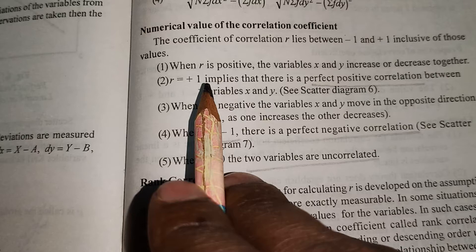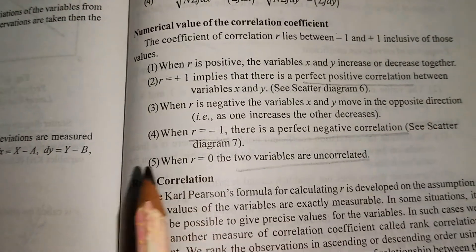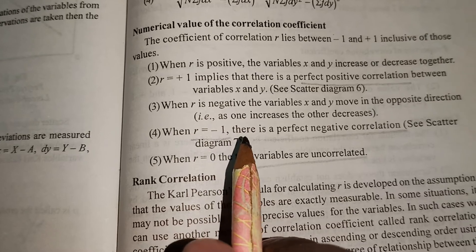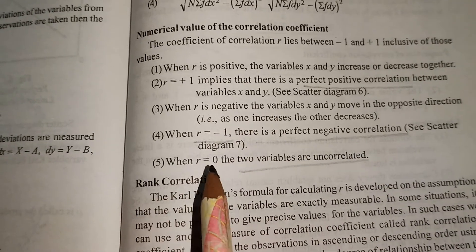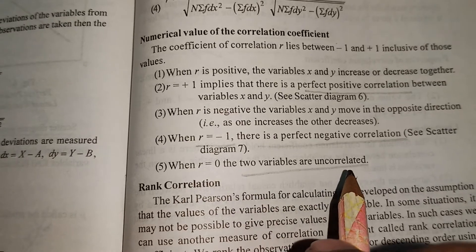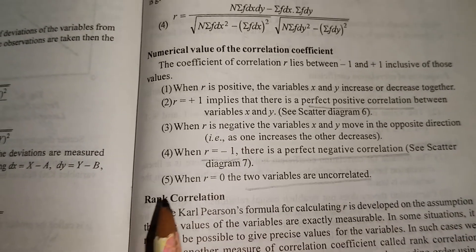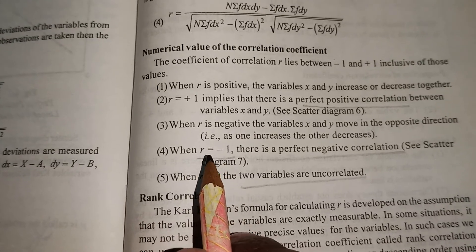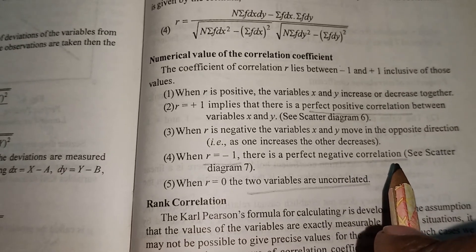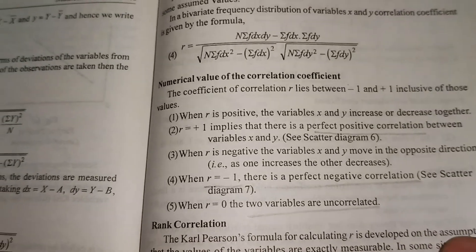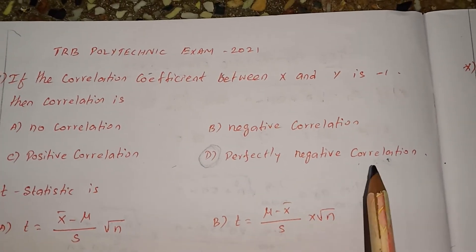When r equals plus 1, that is perfectly positive correlation. When r equals minus 1, that is perfectly negative correlation. When r equals 0, that is uncorrelated, meaning no correlation. So r equal to minus 1 means perfectly negative correlation — option D is the correct answer.